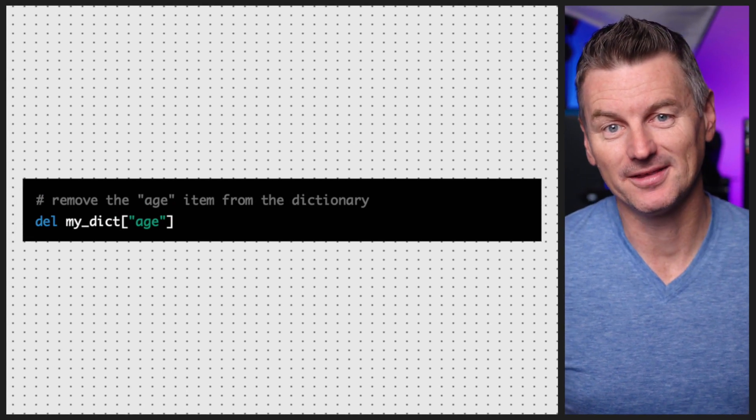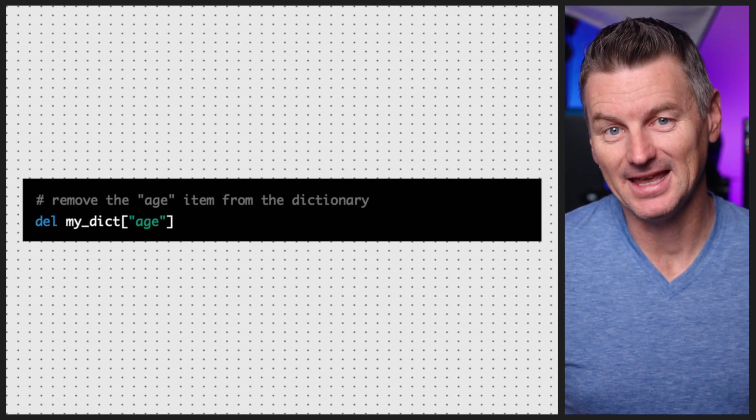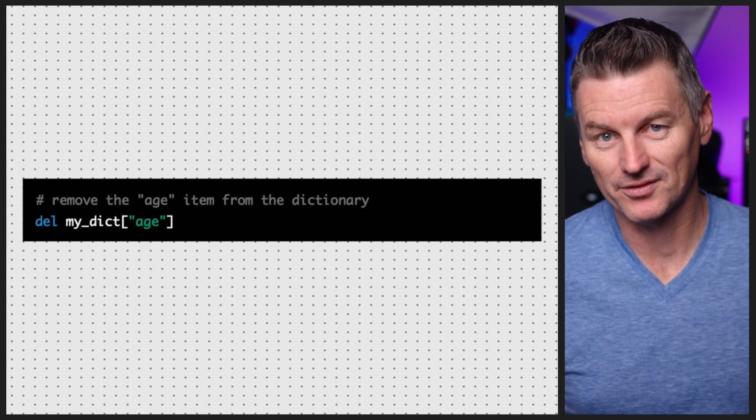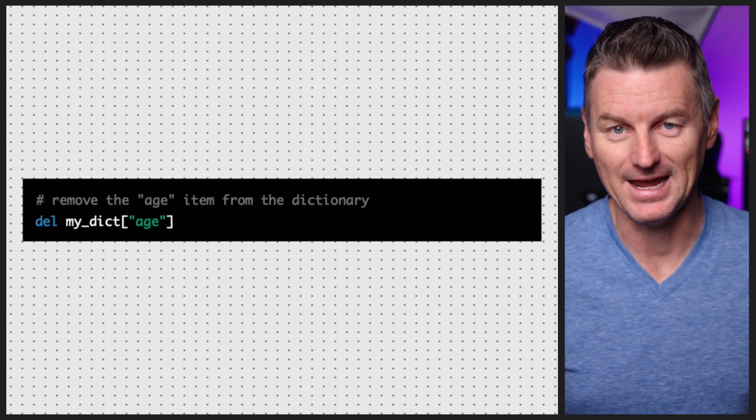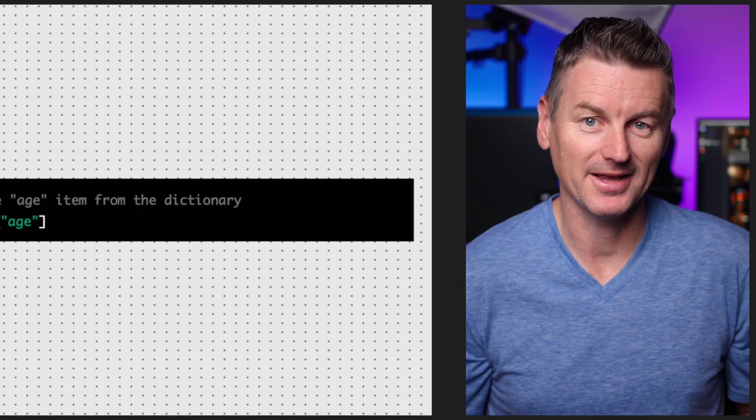To remove an item from a dictionary, you can use the del keyword and provide the key of the item you want to remove. Let's remove the age item from my_dict.